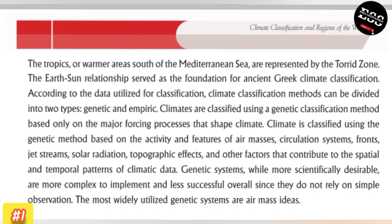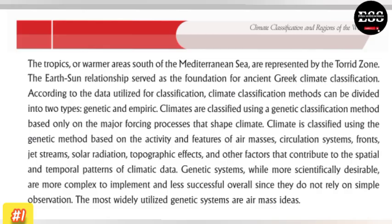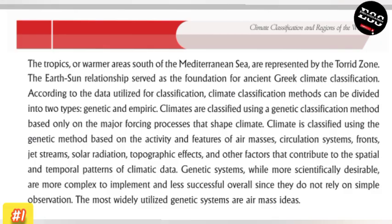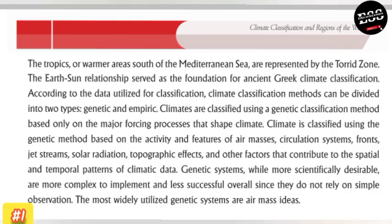Genetic classification is based on the activities and features of air mass circulation systems, fronts, jet streams, solar radiation, topography effects, and other factors that contribute to the spatial and temporal patterns of climate data.